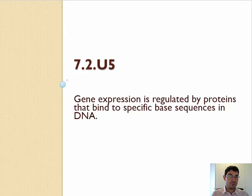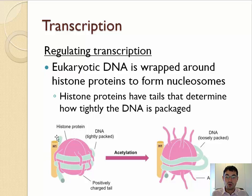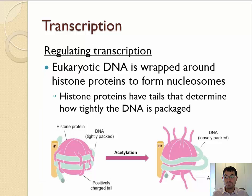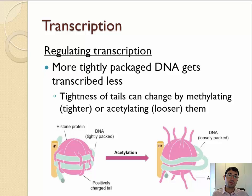One of the easiest ways to prevent RNA polymerase from attaching to a DNA sequence is by figuring out how tightly wound up the nucleosomes are. Eukaryotic DNA is wrapped twice around eight histone proteins with an H1 linker to make a nucleosome. However, those histone proteins technically have tails that help tighten the DNA. The more tightly packaged the DNA is, the less it's actually going to get transcribed and the less it's going to make proteins. Different cells will either tighten or loosen the nucleosomes to help transcribe different proteins based on their function — whether they're a neuron, a muscle cell, a skin cell, etc.